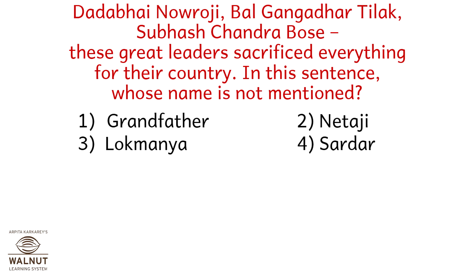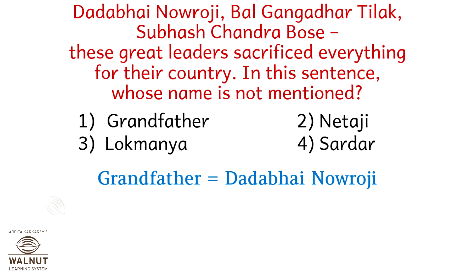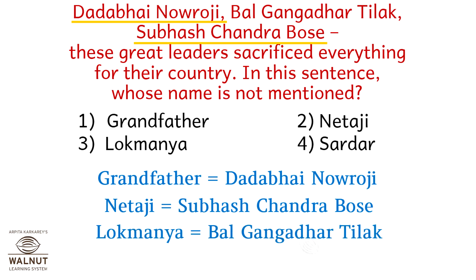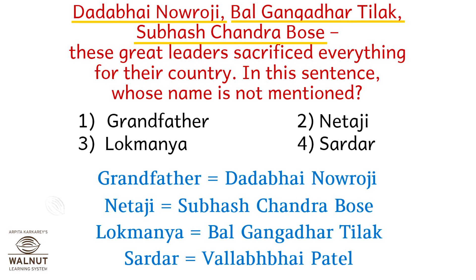RAMAYANA — leaders sacrificed everything for their country. In this sentence, whose name is not mentioned? Option 1: Grandfather. Option 2: Netaji. Option 3: Lokmanya. Option 4: Sardar. Grandfather is Dada Bhayanoroji, which is already mentioned. Netaji is Subhash Chandra Bose, mentioned in the sentence. Lokmanya is Bal Gangadhar Tilak, also mentioned. Sardar is Vallabh Bhai Patel, who is not mentioned. So the correct answer is option 4, Sardar.